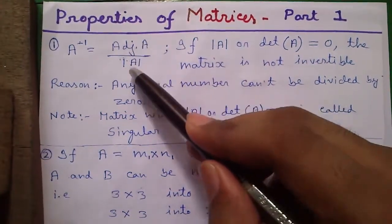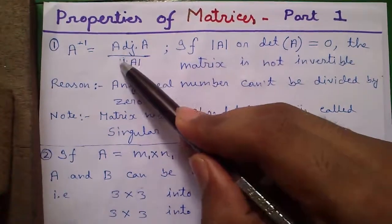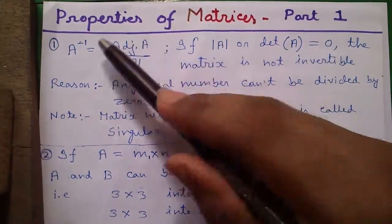The reason is if this value is 0 and this adjunct A value, so we can't divide any real number by 0. That is why if this value is 0 or determinant value is 0, we can't find out the inverse value.